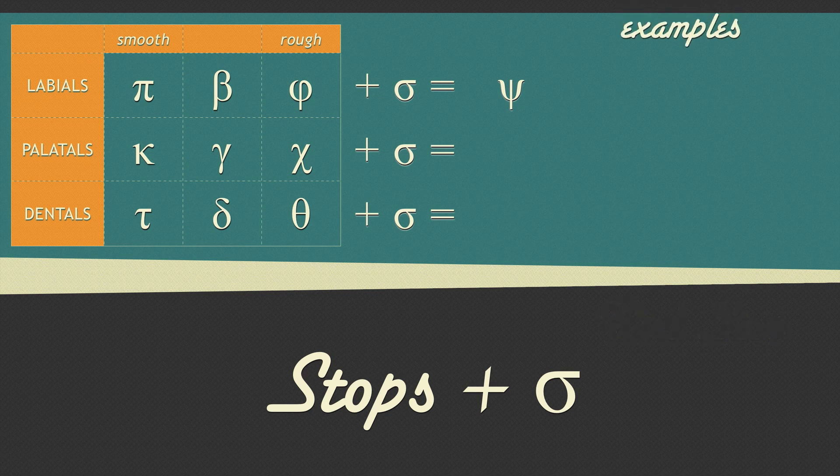Here's an example. The word stem ends in a labial and when an ending with a sigma is added, the labial plus sigma equals a psi.